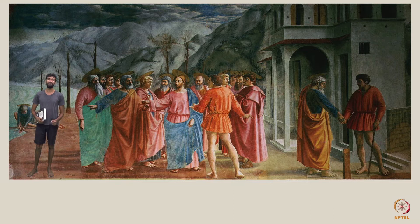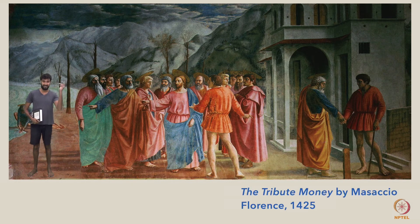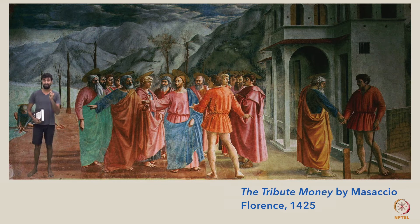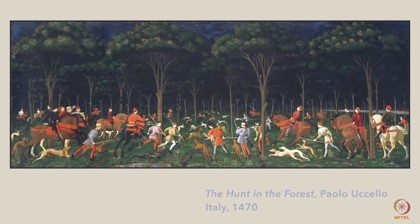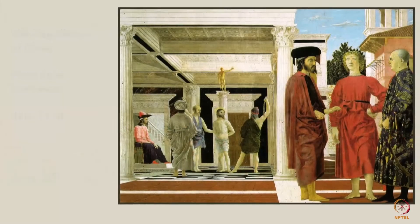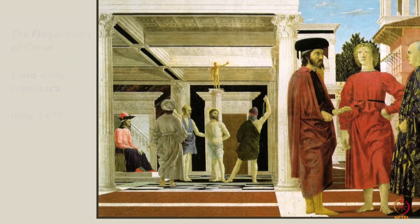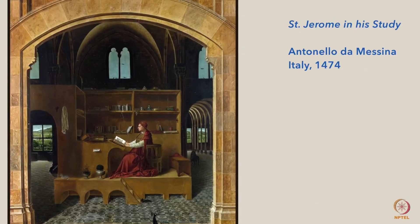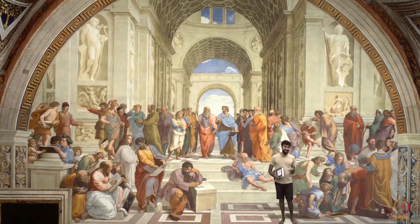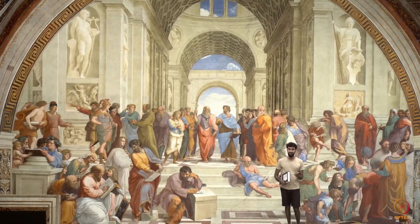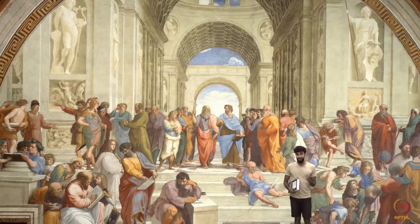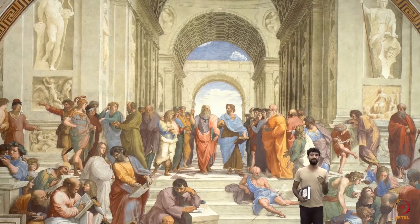These basic features of linear perspective were discovered by artists in Italy in the early 15th century. This painting, from 1425, is thought to be one of the first to consistently use a fixed vanishing point for a full family of parallel lines. As the knowledge of perspective spread, more and more paintings appeared that featured it. It didn't take long for artists to master this new tool. And yet, over the next few centuries, artists found that vanishing points and perspective kept offering fresh possibilities.